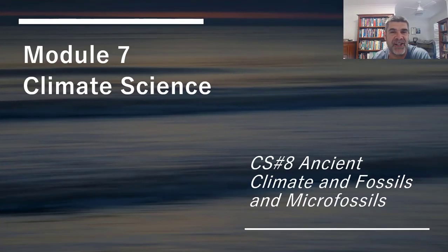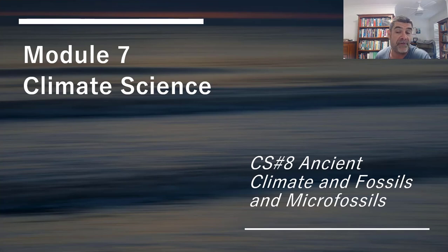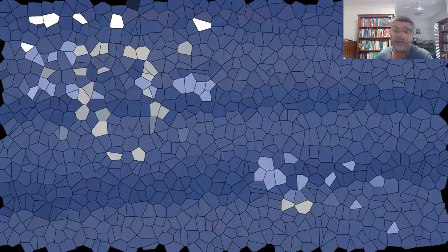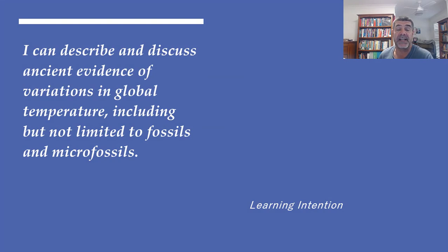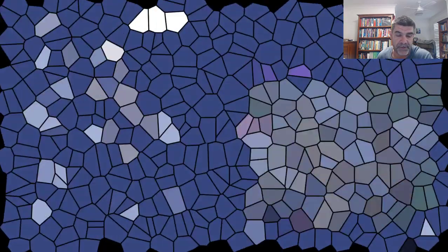Hi students, welcome to HSC Earth and Environmental Science and Module 7 on climate science. This is video number 8. We're continuing our mini-series looking at ancient climates, and this time on fossils and microfossils. What we need to be able to do is describe and discuss ancient evidence of variations in global temperature, including but not limited to fossils and microfossils.